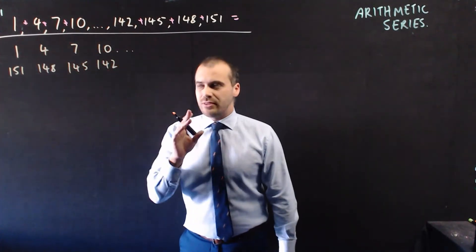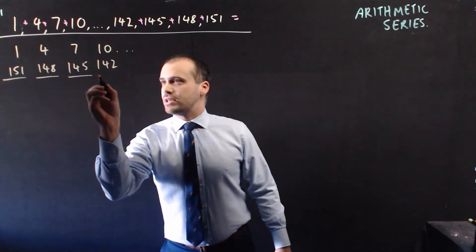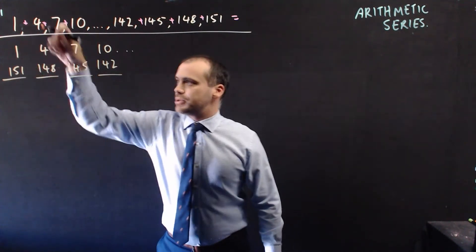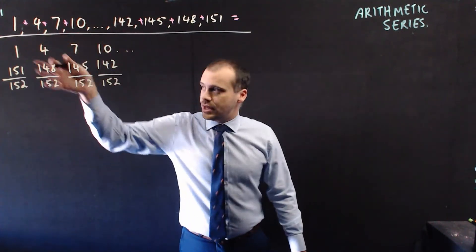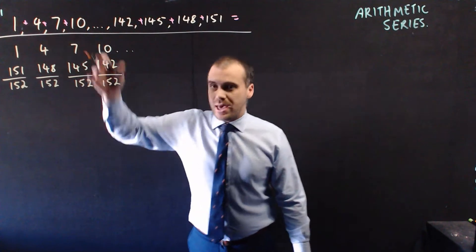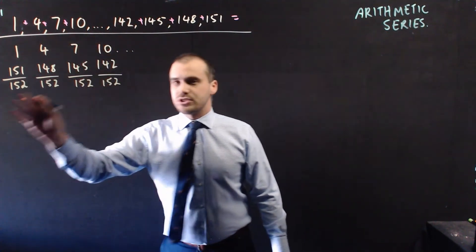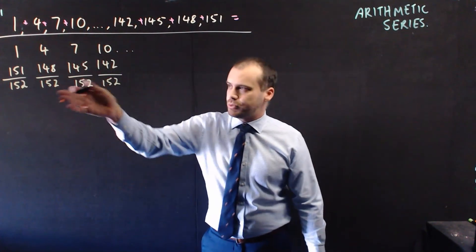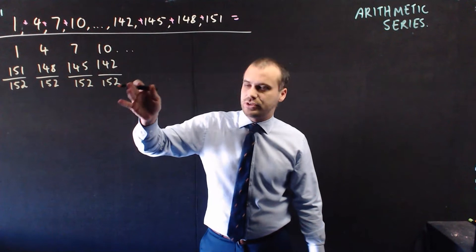And then what you do is add these numbers up. You can see that every pair of numbers gives you the same result: 152, 152, 152, 152.